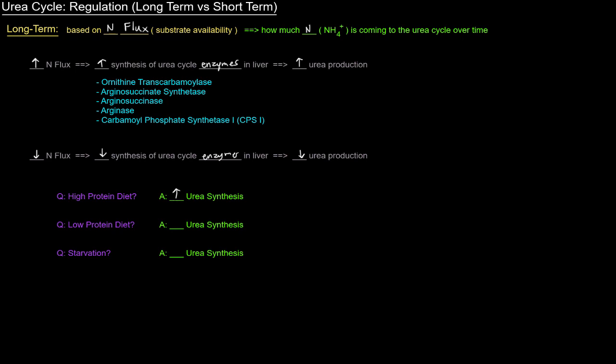The opposite would be true for a low-protein diet. If there's less nitrogen flux, less nitrogen coming to the urea cycle to be processed, there's going to be less urea synthesis.